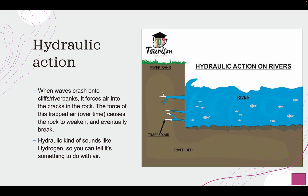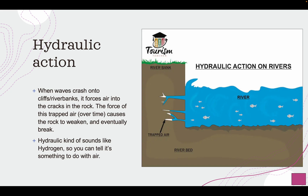Hydraulic action is when waves crash onto cliffs and riverbanks. On a riverbank there are gaps, because soil isn't concrete. As the river crashes against the bank with intense speed, it pushes air into these holes and cracks, which slowly weakens the riverbank until it eventually breaks, widening the river. The sediment falls into the river and gets transported elsewhere. Think of hydraulic as relating to air — the trapped air gets pushed, weakening the rock.